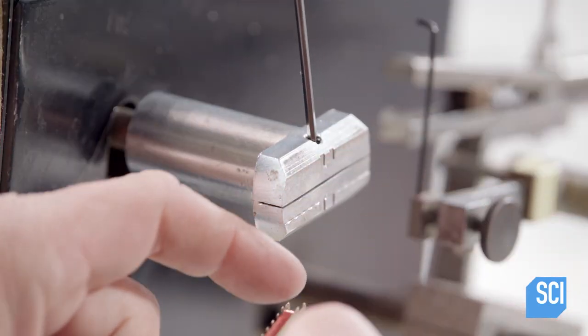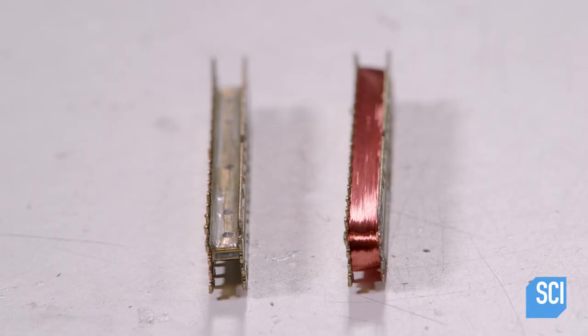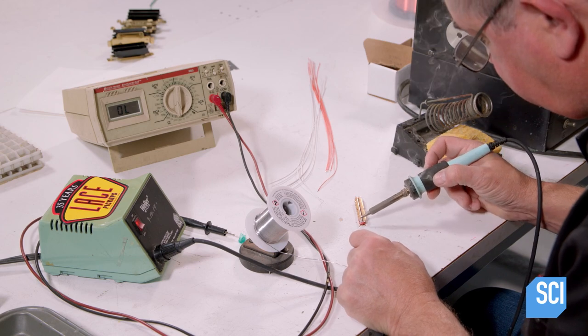By assembling a bobbin with thousands of copper wire windings, he's created a path for magnetic energy. He solders the ends of the copper wire to the bobbin.